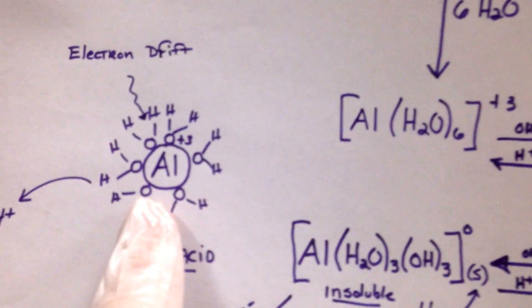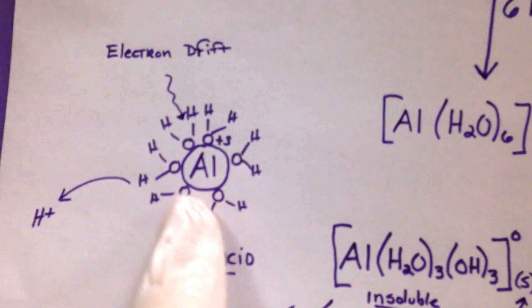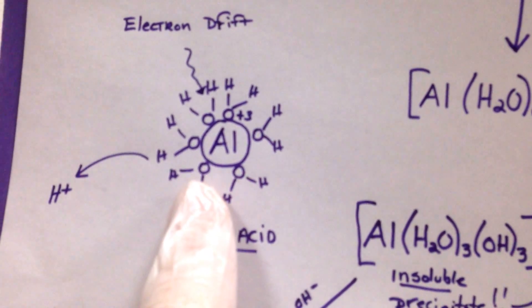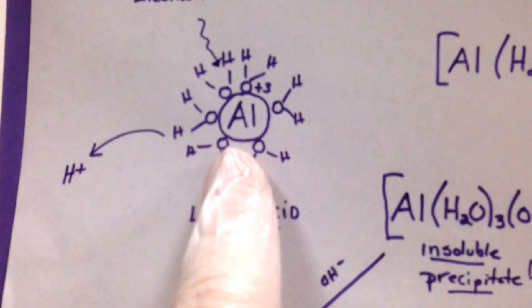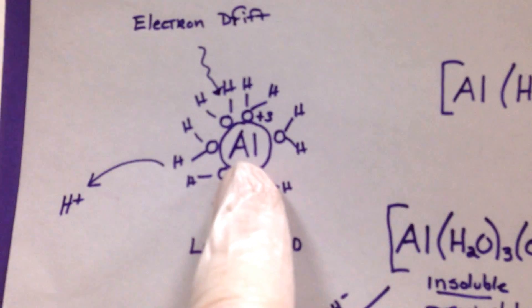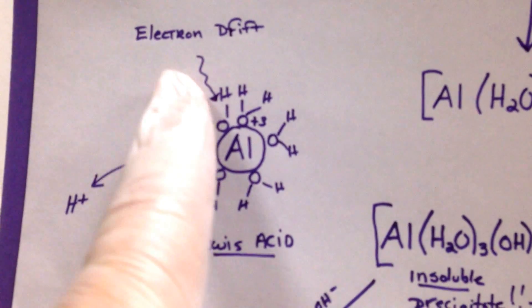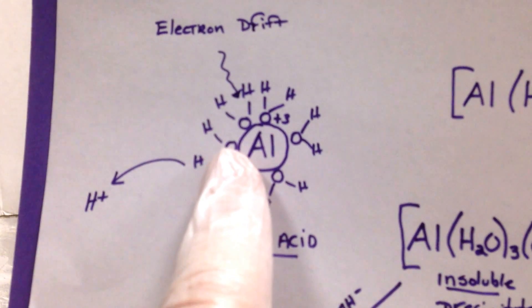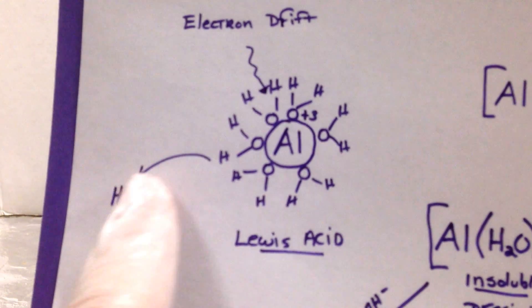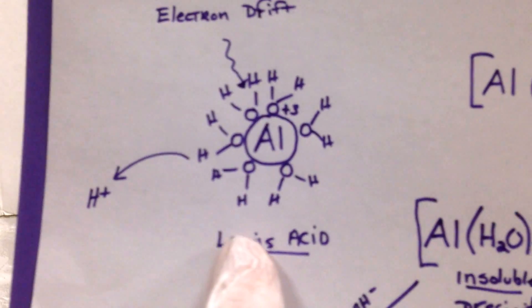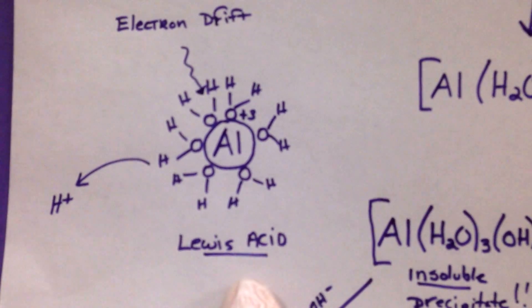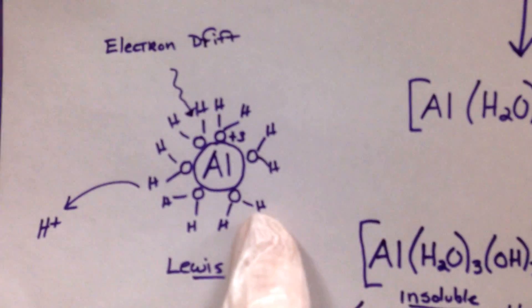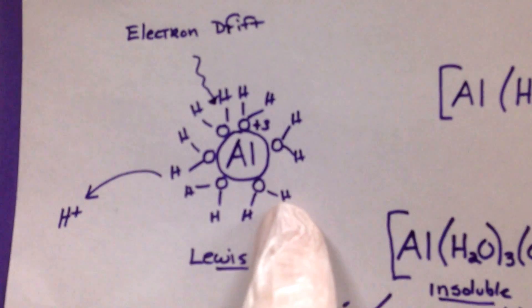They're so attracted to it, so the aluminum ion draws in six waters and becomes a Lewis acid because it draws the electron pair very close to the ion. This causes an electron drift from the hydrogen to the oxygen, and H's can be sloughed off. Therefore, this is an acidic solution now.